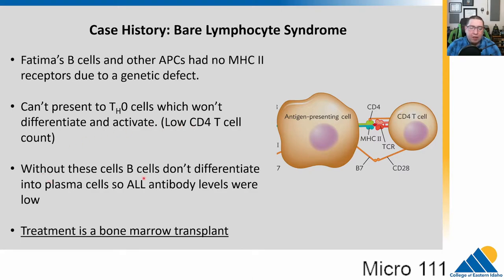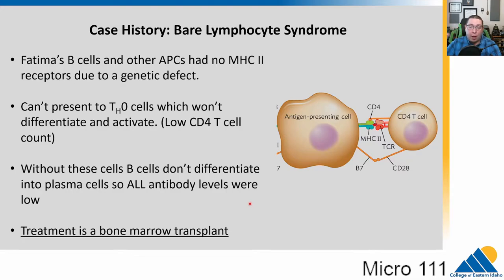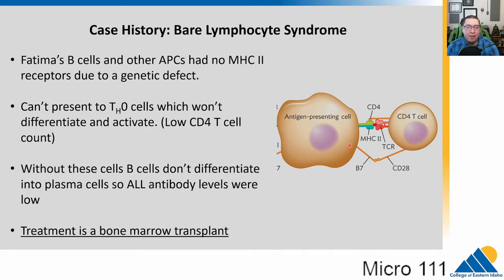Without MHC2, antigen-presenting cells can't present antigens to helper T-cells due to this genetic defect. This means T-cells are not activated or differentiated, leading to low CD4 T-cell counts. Without these, B-cells are not going to differentiate into plasma cells, so all antibody levels are low. The treatment for this is a bone marrow transplant, which is always very risky — particularly in someone with a compromised immune system. The goal is to take healthy bone marrow, where many lymphocytes are made, and transplant it into Fatima.